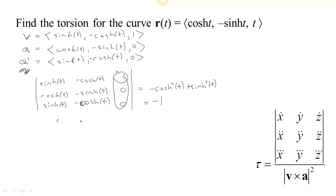Now we need to find V cross A and then find its length. So let's do V cross A here. You could just put it in determinant form to get the formula. We're going to have sinh, -cosh, and 1, and then cosh, -sinh, and 0.